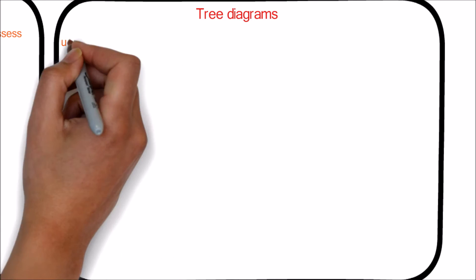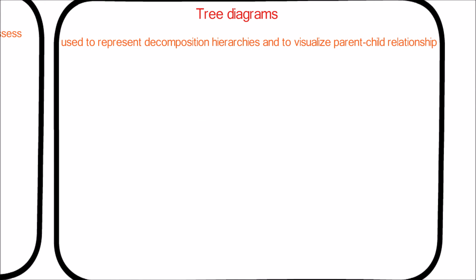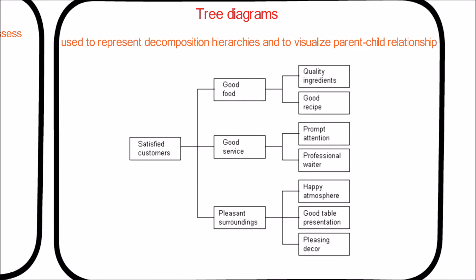Next is the Tree Diagram. This technique is used to represent decomposition hierarchies and to visualize parent-child relationships. As shown in the example, to obtain maximum customer satisfaction, the determined factors are good food, good service, and pleasant surroundings. Each of these factors are connected to customer satisfaction and the parent-child relationship has been shown using the Tree Diagram.